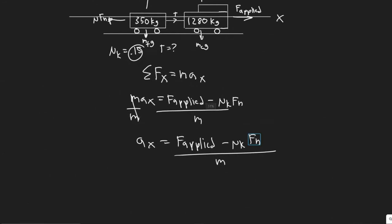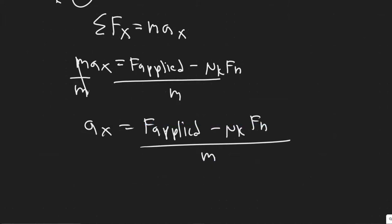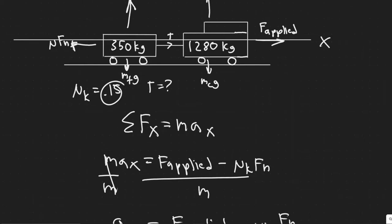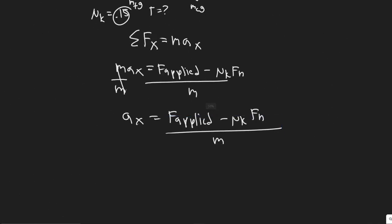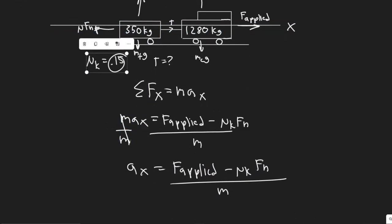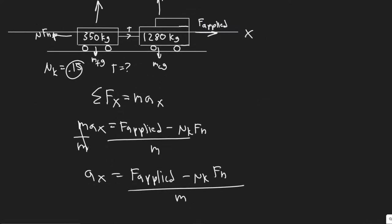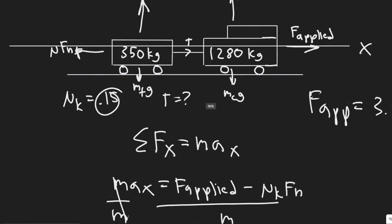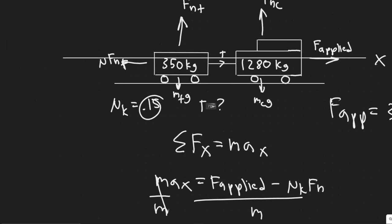Now we need to find F sub N. The M here is actually the mass of both objects combined, since we're finding the acceleration of both as one object. The force applied is 3.6 times 10 to the 3 newtons. The normal force times mu sub K is only for the trailer, so we need to find the normal force acting on the trailer. We do that by summing the forces along the Y for the trailer.